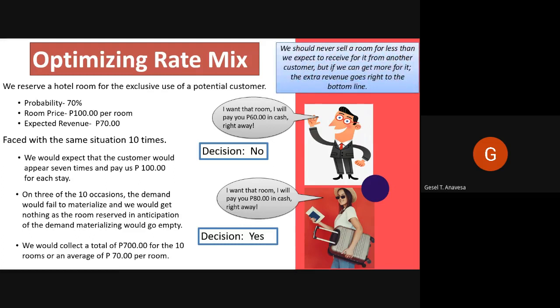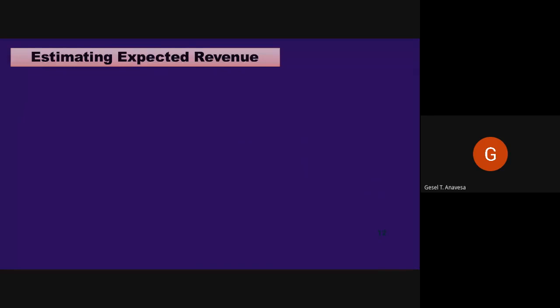We should never sell a room for less than we expect to receive for it from another customer. But if we can get more for it, the extra revenue goes right to the bottom line. The key to effective revenue management is the accurate estimation of the expected revenue of each room in a hotel. After all, neither occupancy nor average rate alone can create a strong and healthy business. The focus has to be on RevPAR and thus revenue.